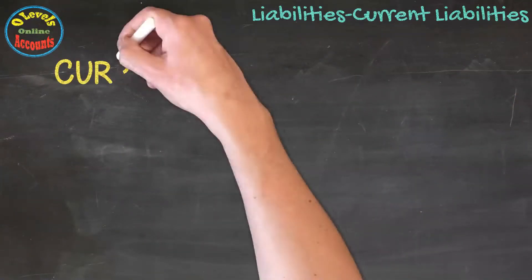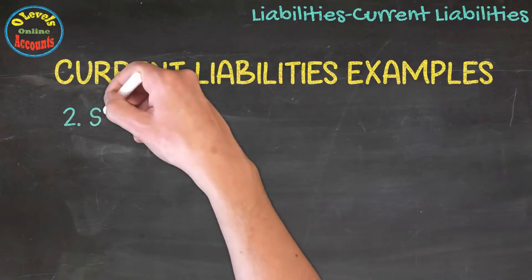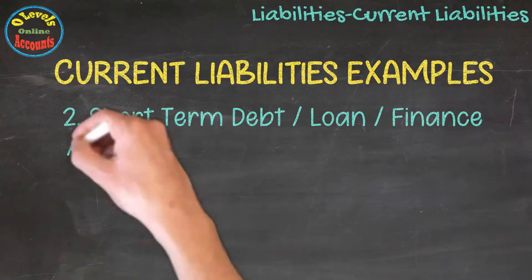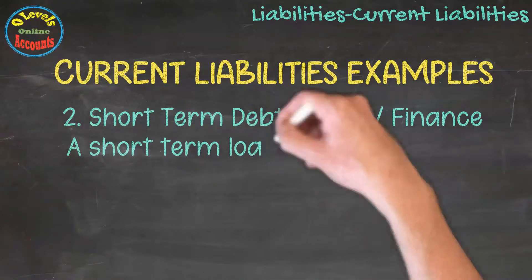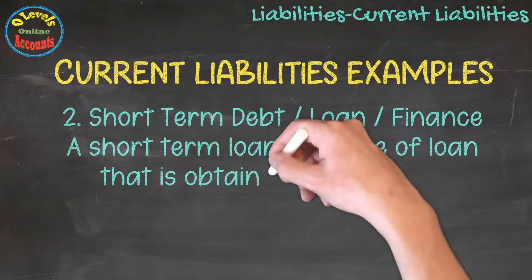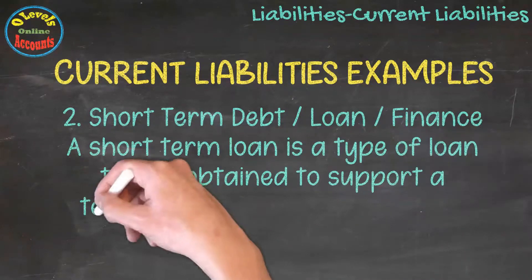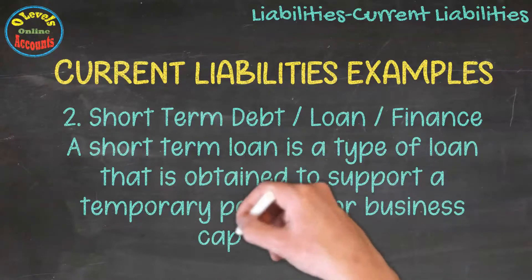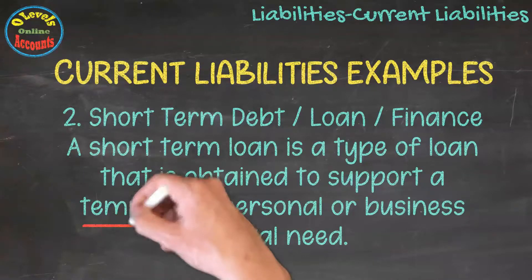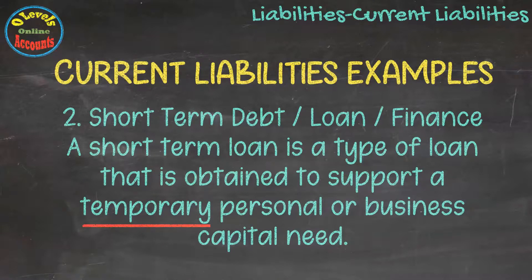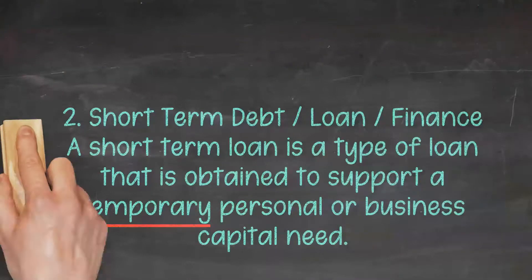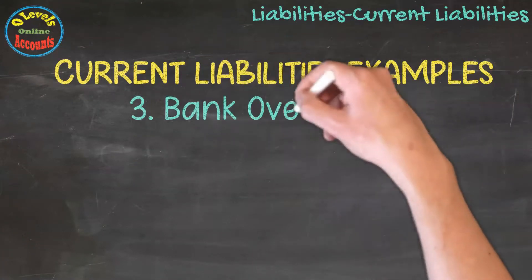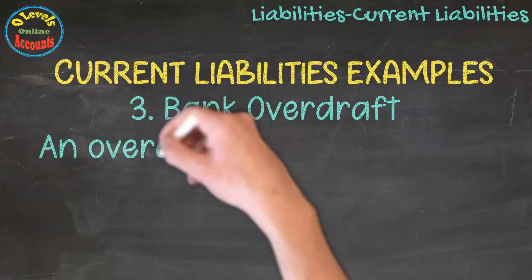The second example of current liabilities is short-term debt, loan, or finance. A short-term loan is a type of loan that is obtained to support a temporary personal or business need. The third example of current liabilities is bank overdraft.